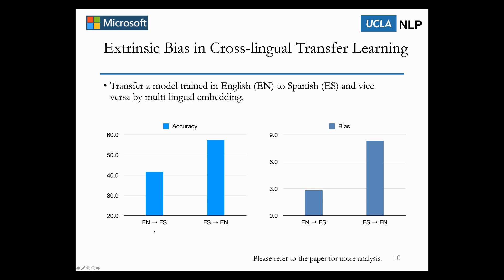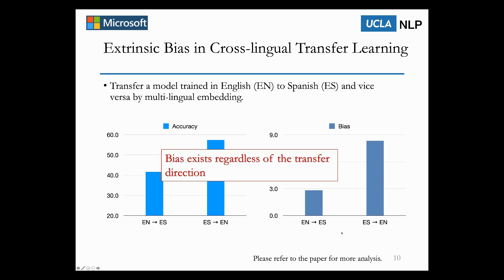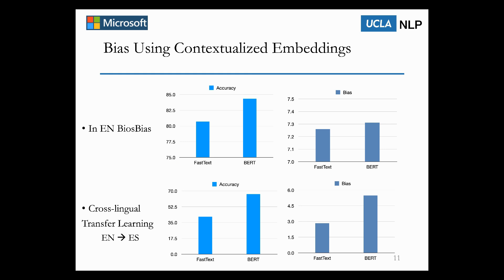We also do the analysis with contextualized embeddings by replacing the FastText embedding with multilingual BERT. The top row is the result on the English portion of the bias dataset, and the bottom one is the result when we do cross-lingual transfer learning from English to Spanish. We found that using multilingual BERT helps to improve the model's performance in both cases. But similar to the FastText case, the bias still exists in both monolingual and cross-lingual transfer learning settings when using multilingual BERT.